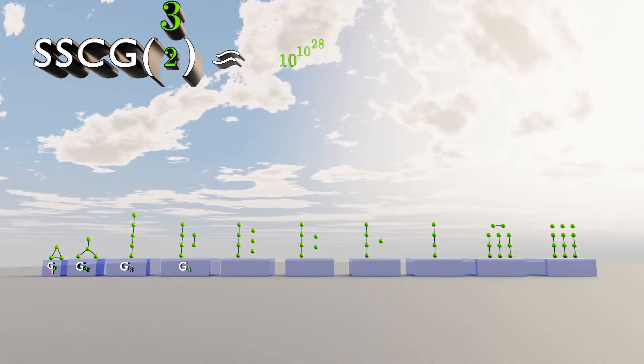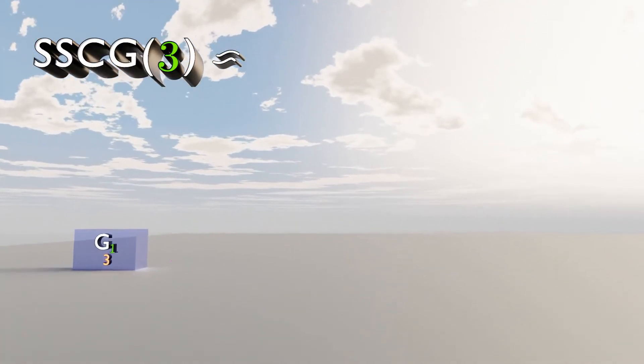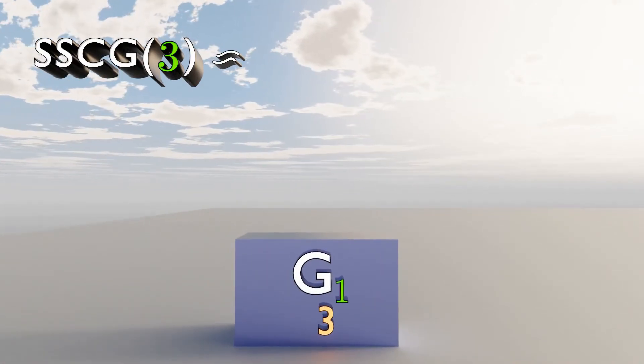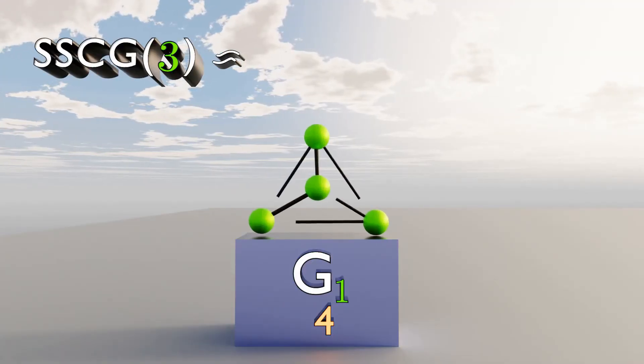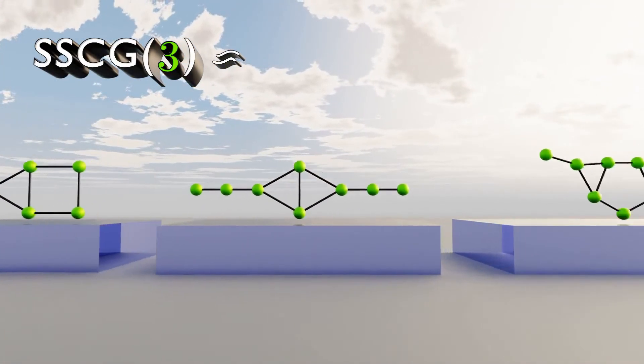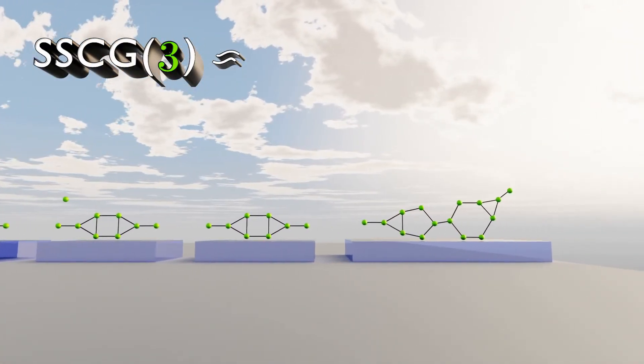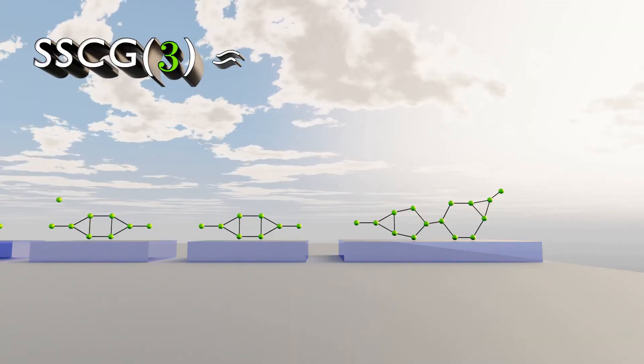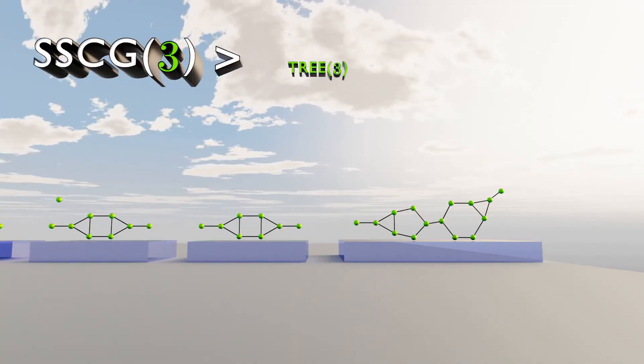If we do SSCG3, our first graph can start with 4 vertices. Now SSCG3 is greater than tree 3.